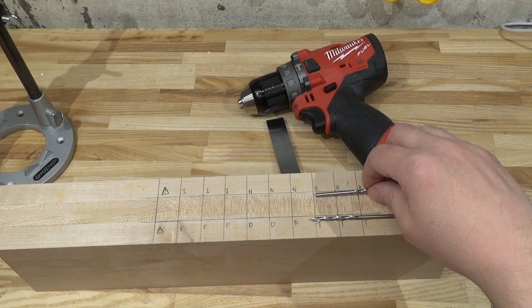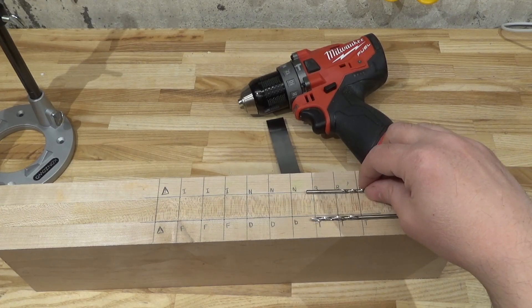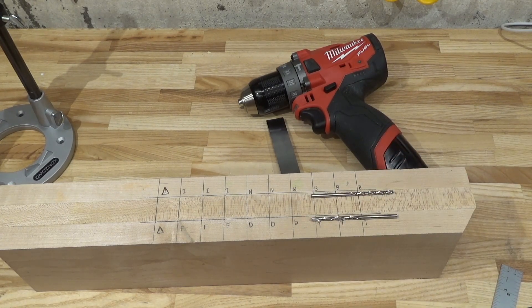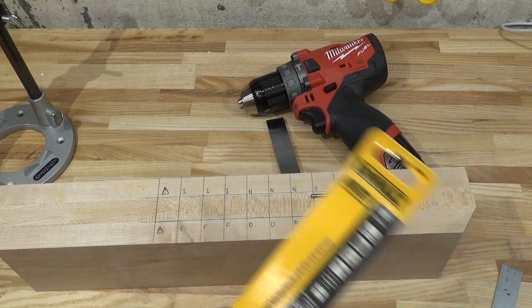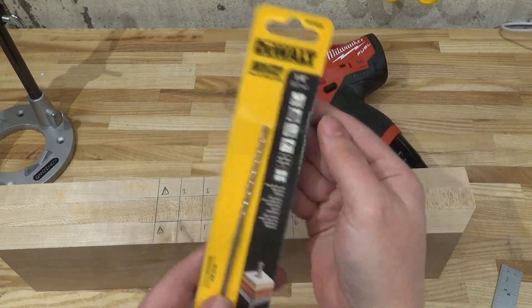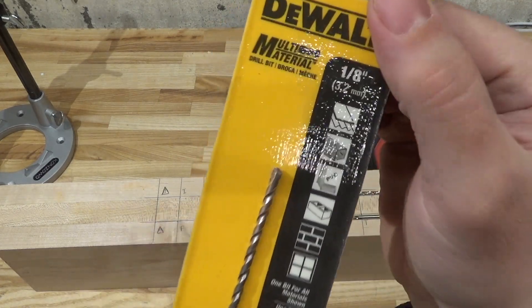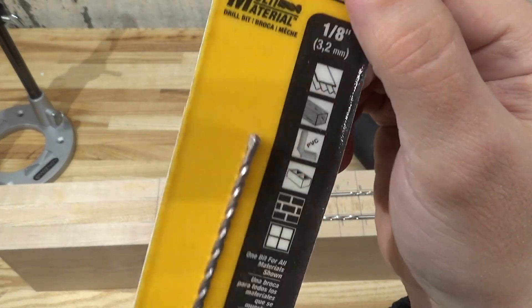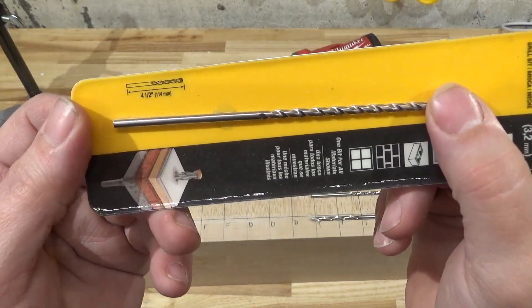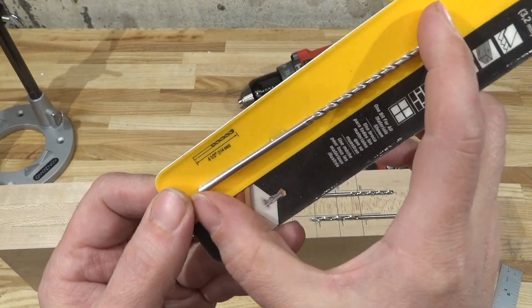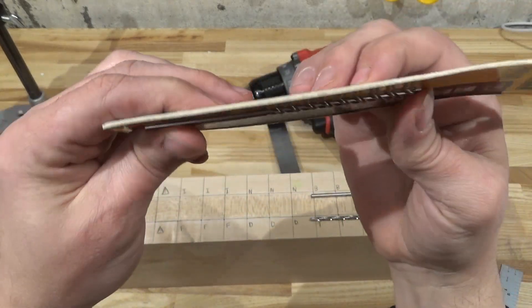After that, we have a DeWalt multi-material bit. I got this because it's one-eighth as well. It's really quite a long bit; it has a fair bit of flexure to it.